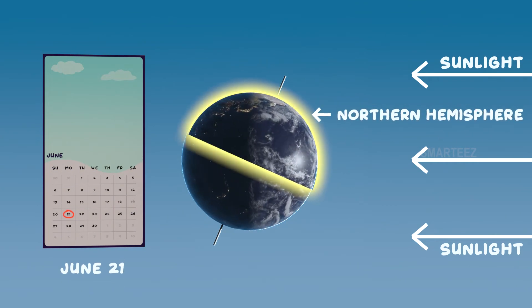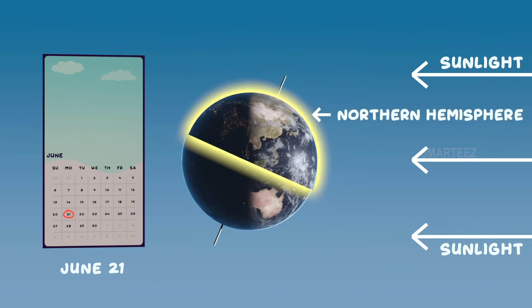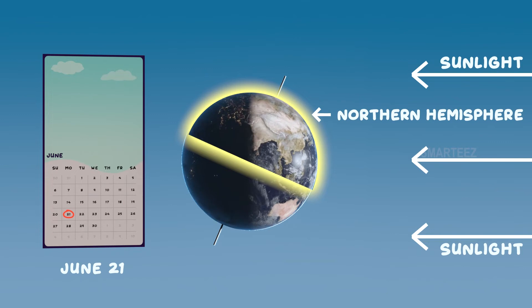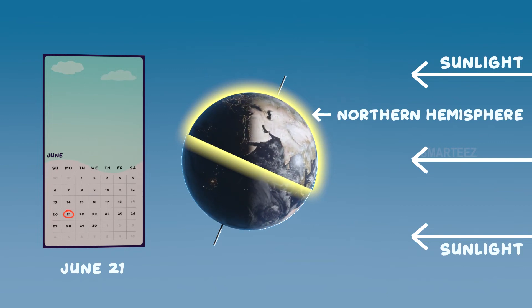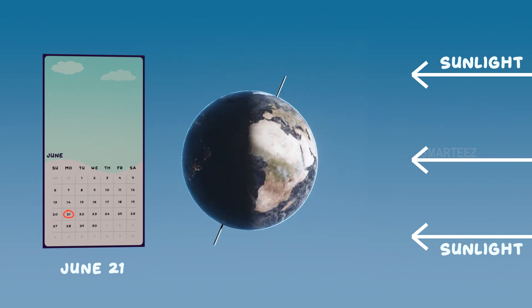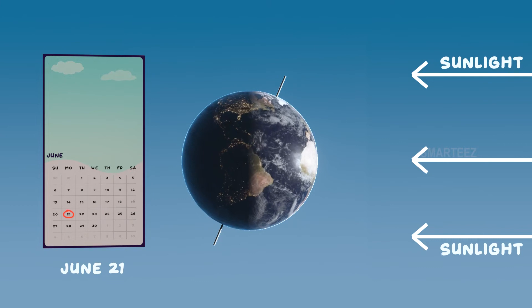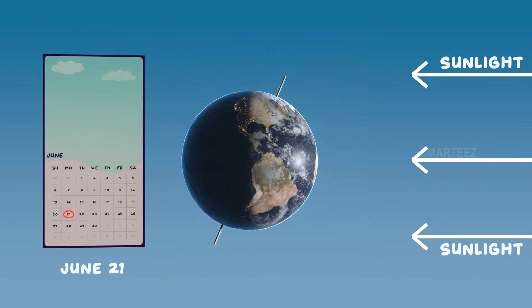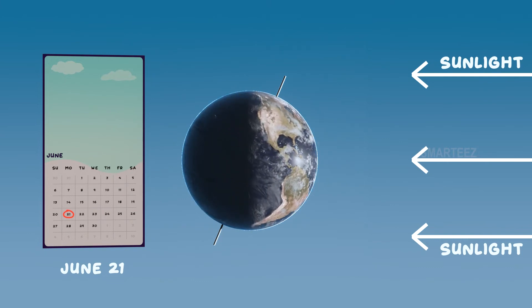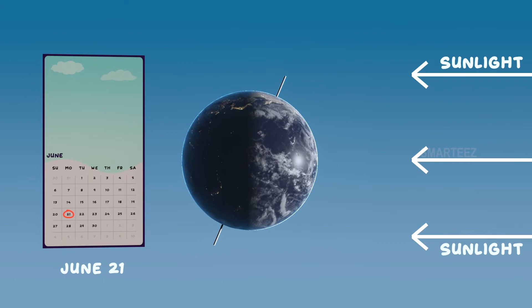By June 21st, the northern hemisphere experiences the longest duration of sunlight — it's the start of summer. But we experience hot weather even before June 21st!